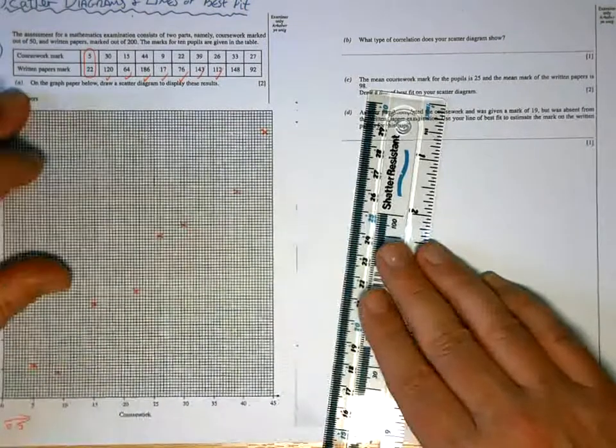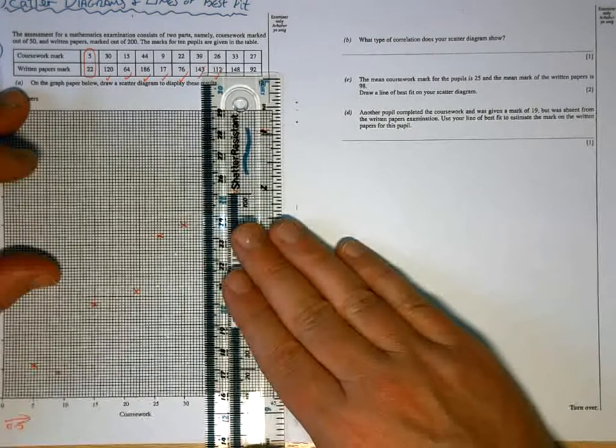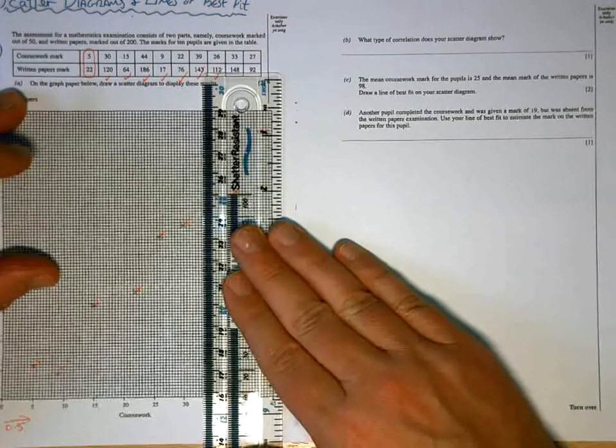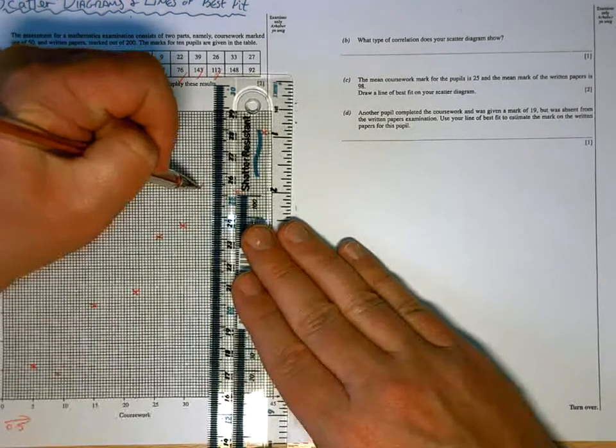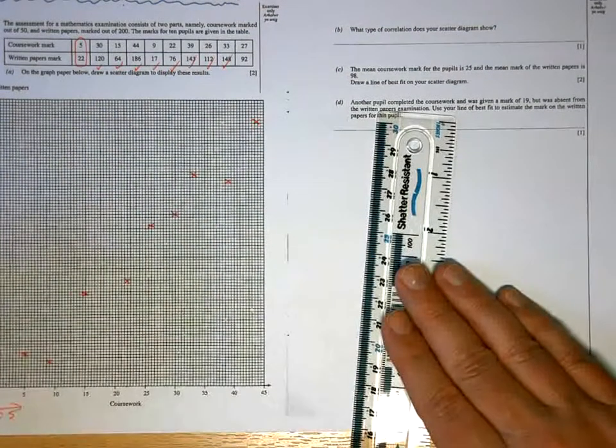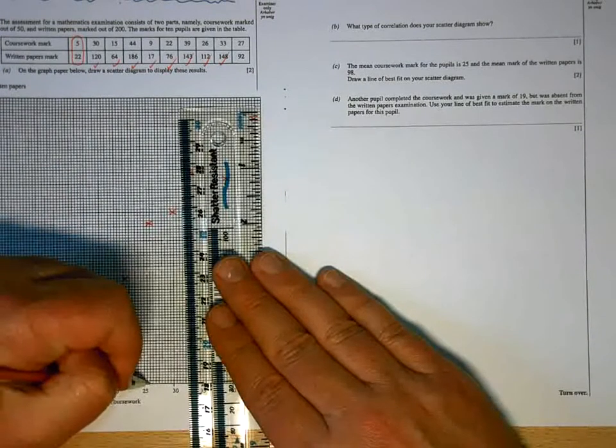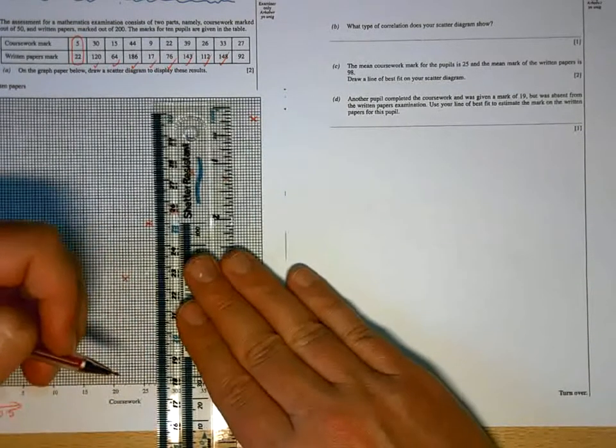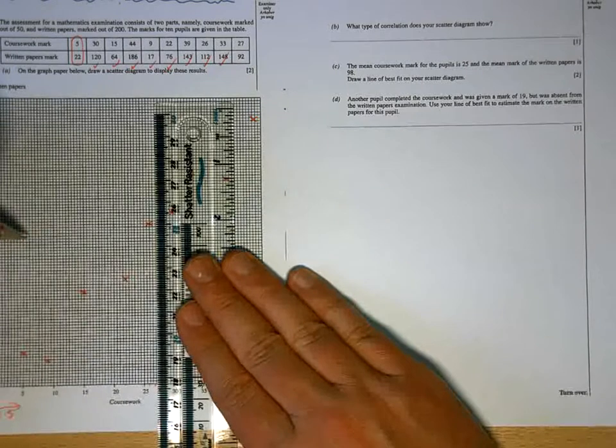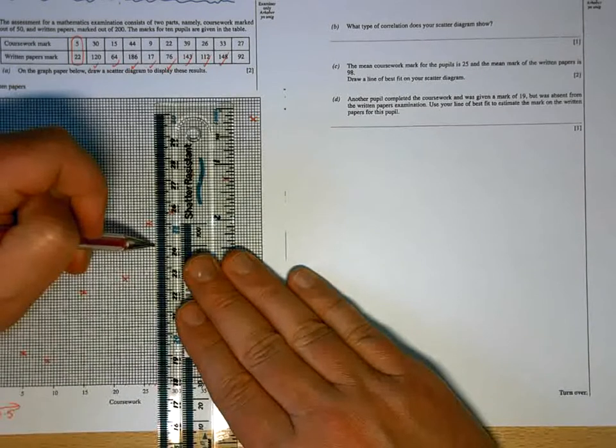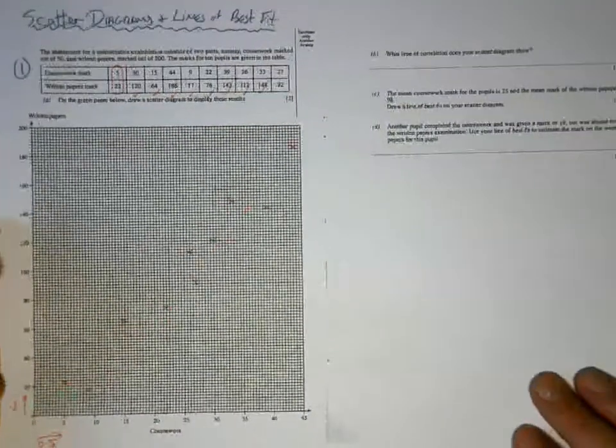33, 148. 35, 34, 33 will be there. And 148, 142, 4, 6, 8 will be there. And 27, 92. 25, 26, 27. And 92 will be 100, 2, 4, 6, 8. 92 will be there. So those are the points plotted.